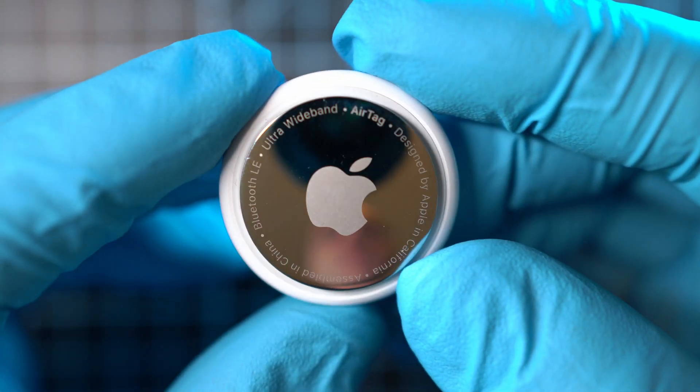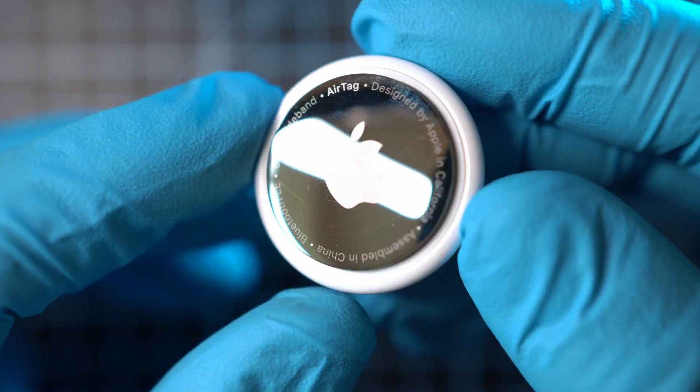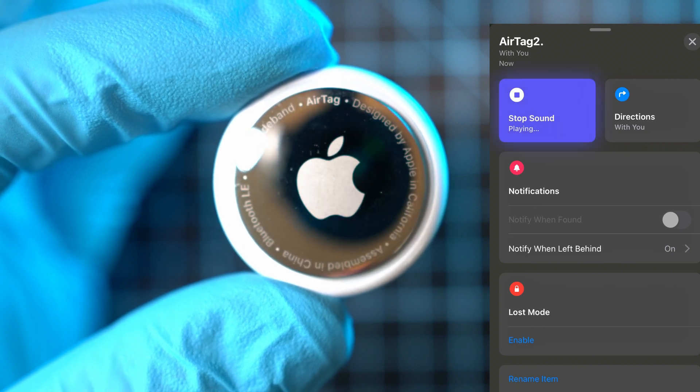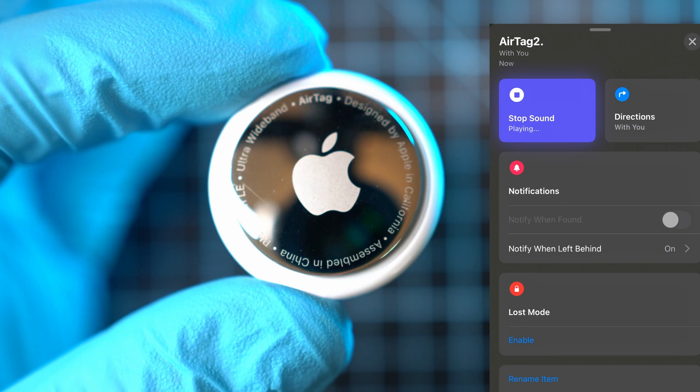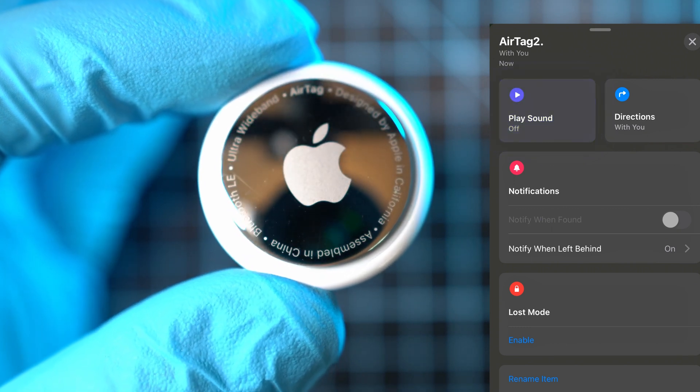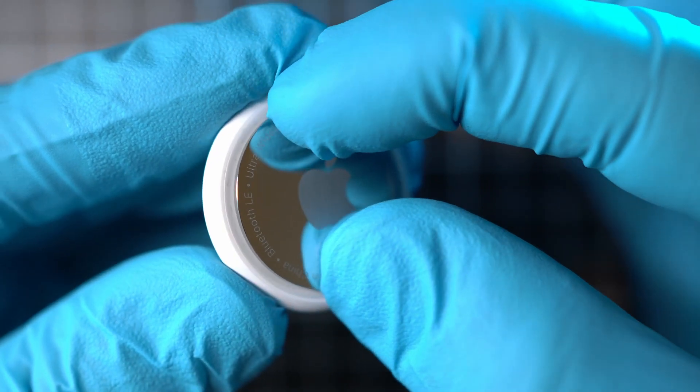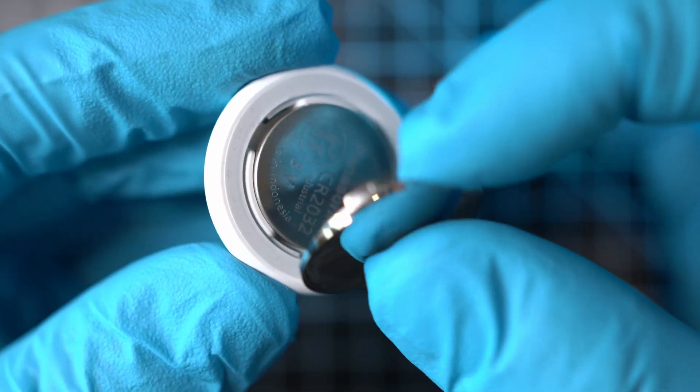First, let's see or hear the sound of an untouched AirTag. Now, let's open it. Starting with the battery cover, push in and twist anti-clockwise.